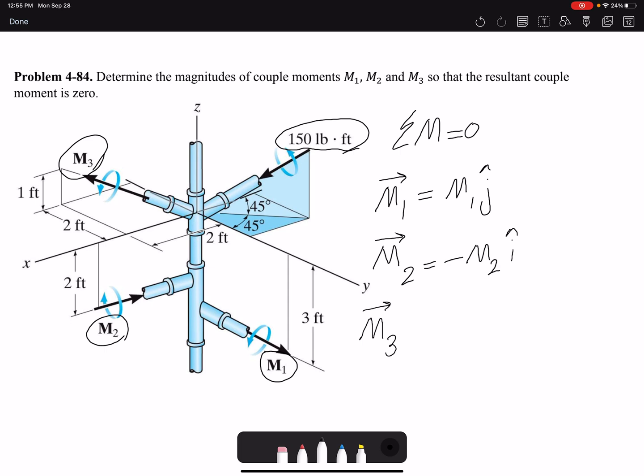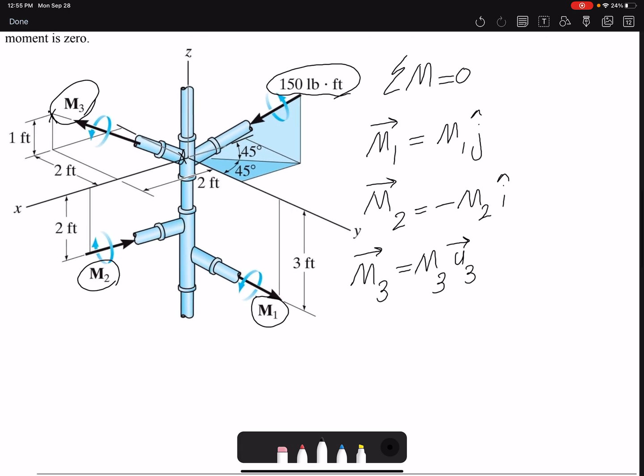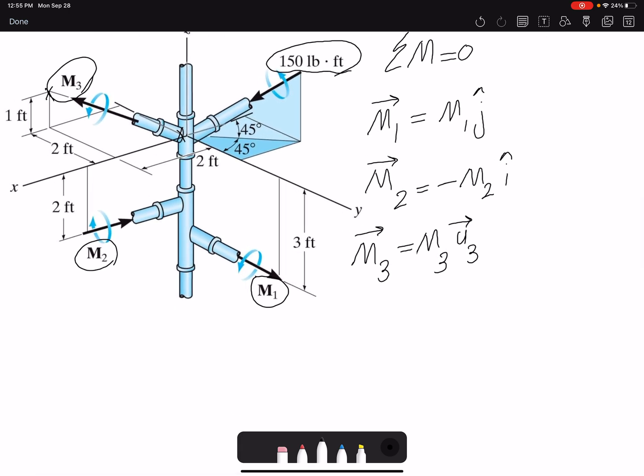M3, I don't know the magnitude, but I can find the direction. I know M3 is going from here to the point here. I have the dimensions, so I can find a unit vector and then write it in vector form.